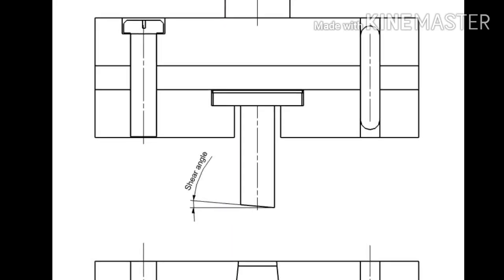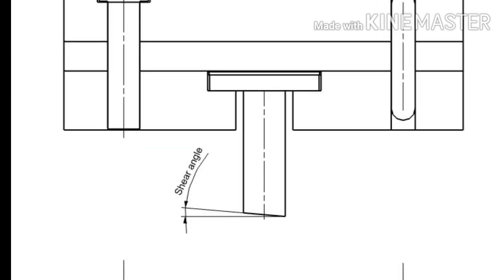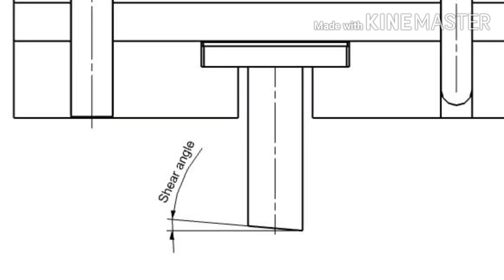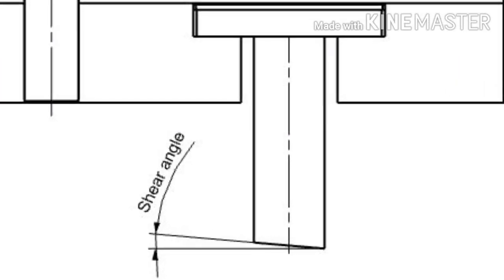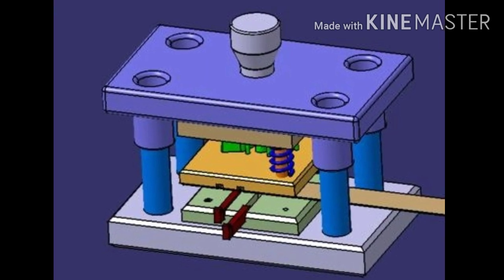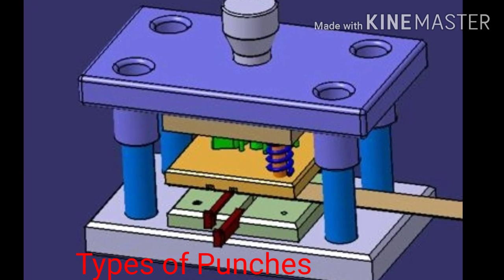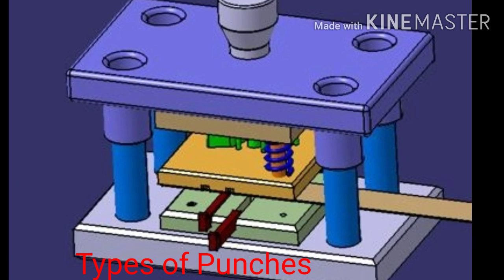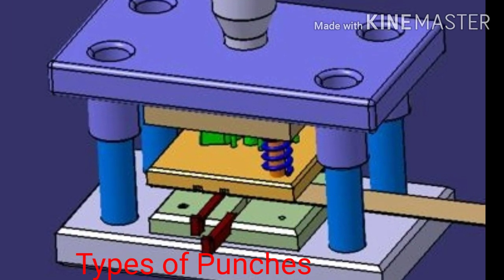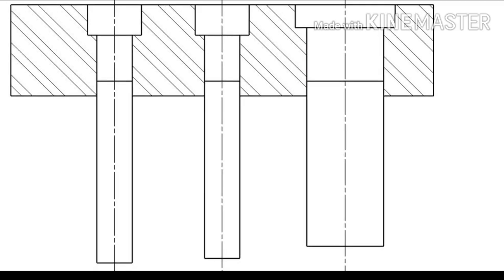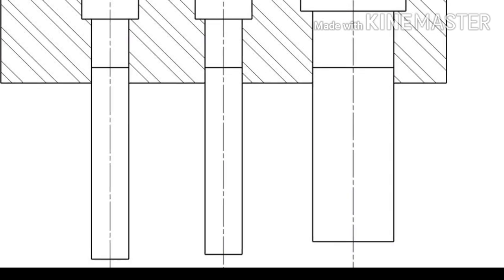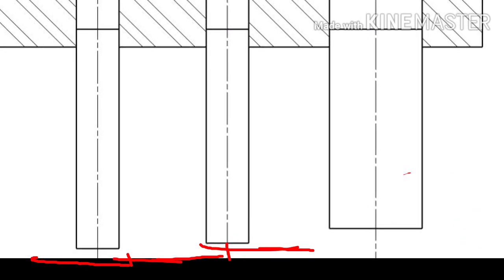For the blanking operation, we have already provided the shear angle on the die, and for the piercing operation, we have provided the shear angle on the punch — it is more clear from the image. In my earlier videos, I have explained the various types of punches and provided the link in the description box, so new viewers who want to know the types of punches can please refer to the below videos. Another method to reduce the cutting force is to step punch lengths. In stepped punch lengths, punches or groups of punches are made progressively shorter by above one sheet thickness — that is called stepped punches.